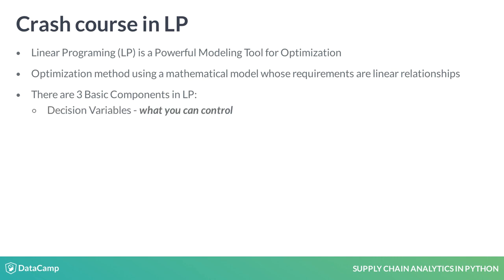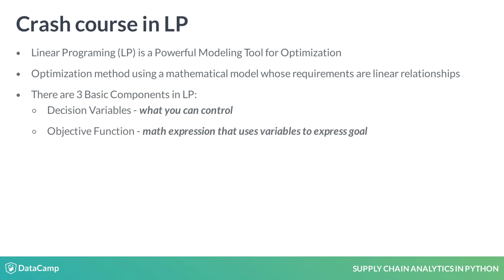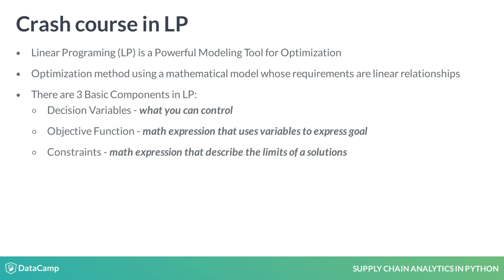First are the decision variables — the things that you can control. Next, the objective function, which describes the goal as a mathematical expression. It is what you want to maximize or minimize, such as profit or cost. Finally, because we live in the real world, there are constraints that limit our possible solutions — for example, manufacturing capacity.